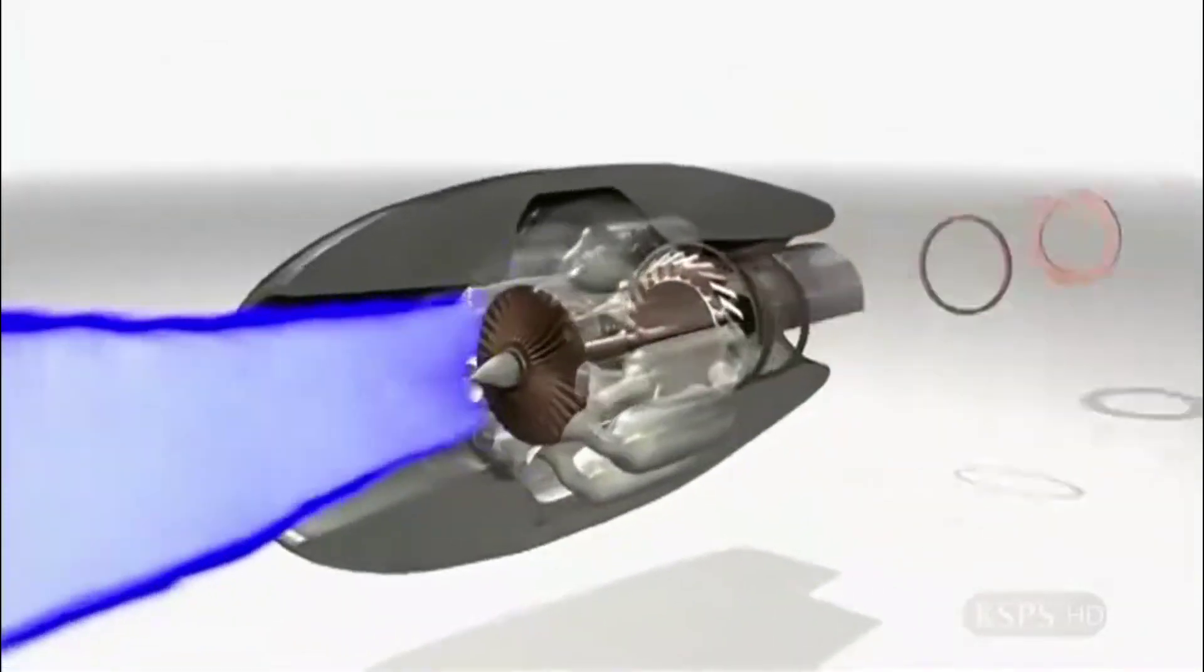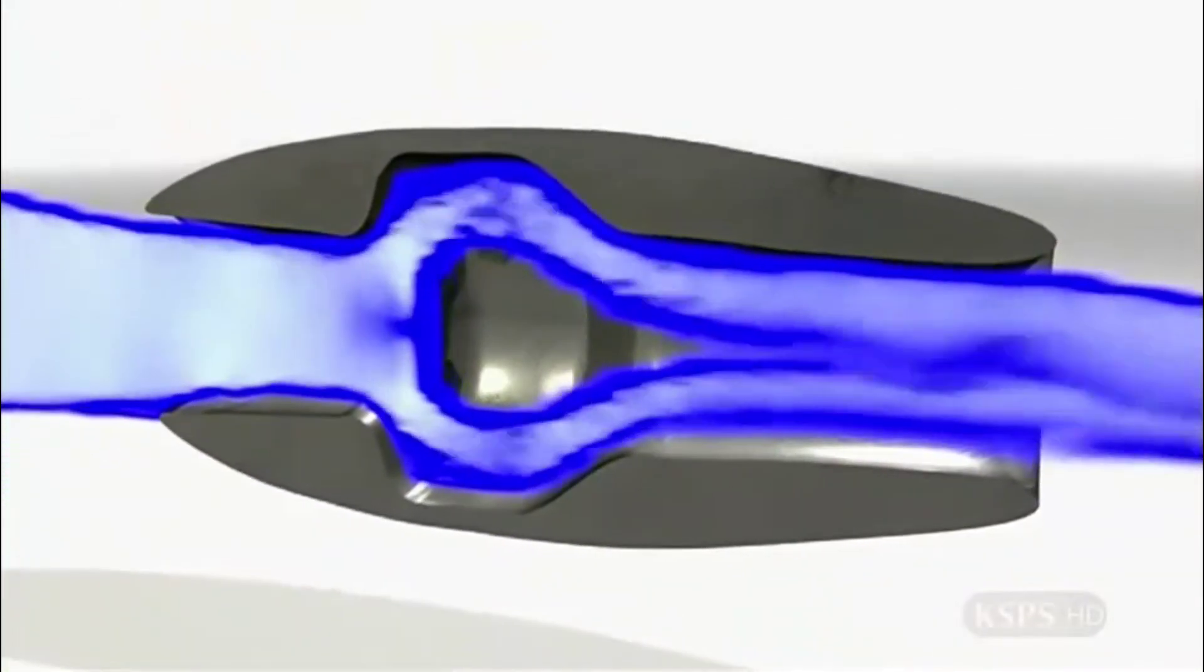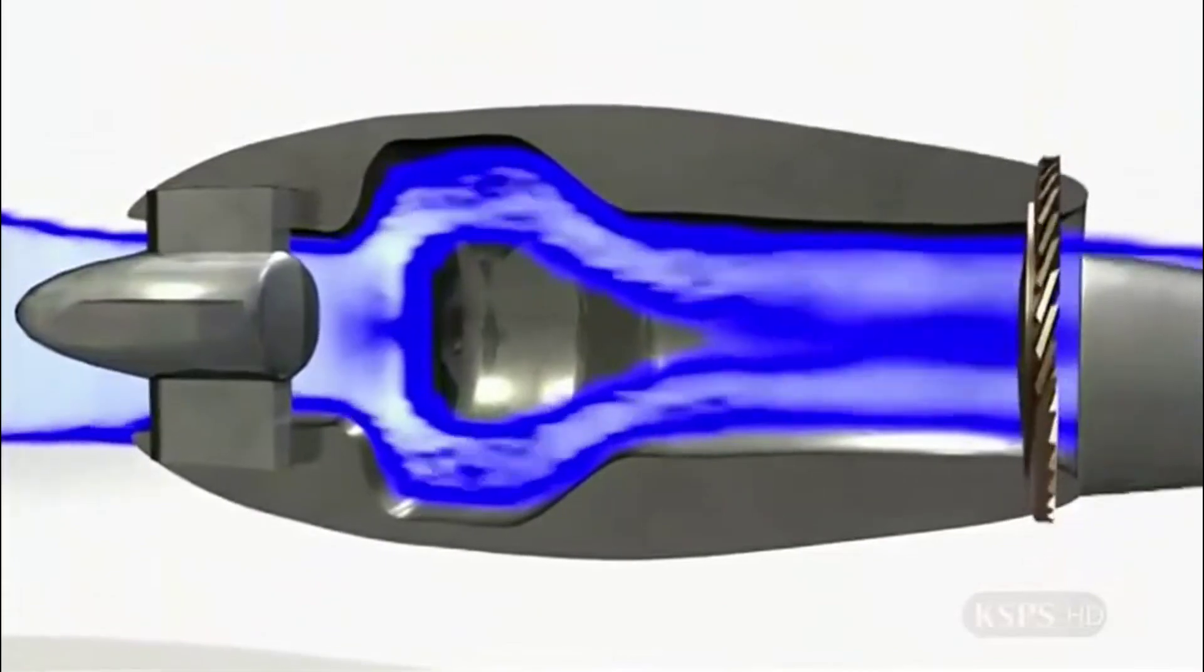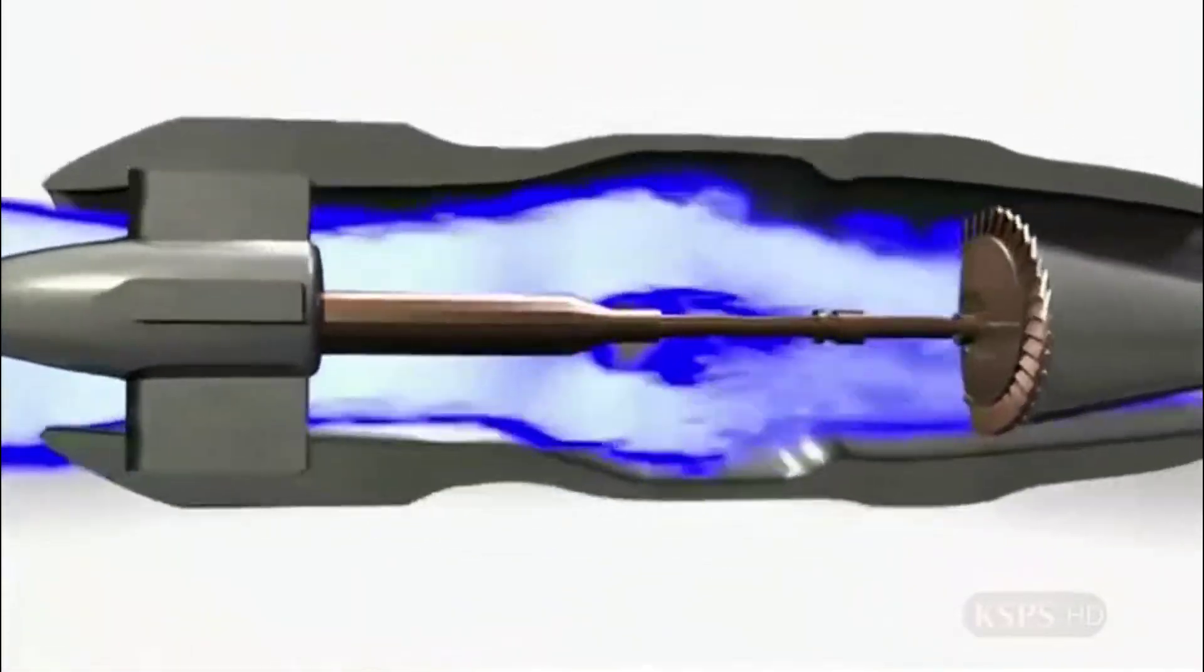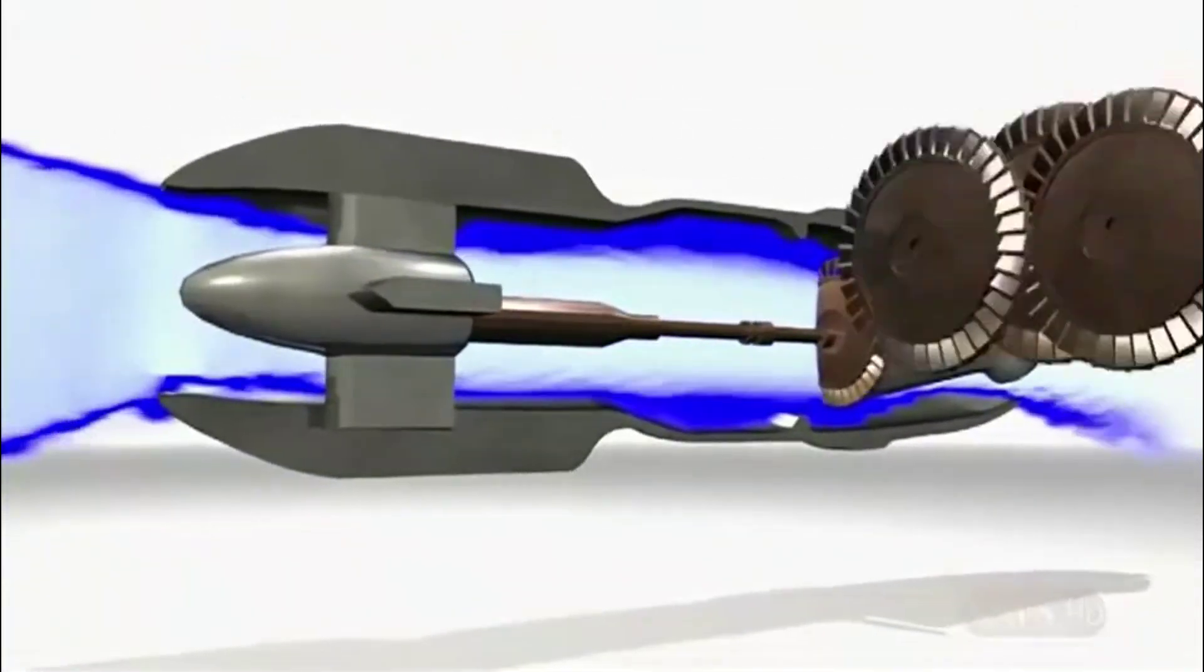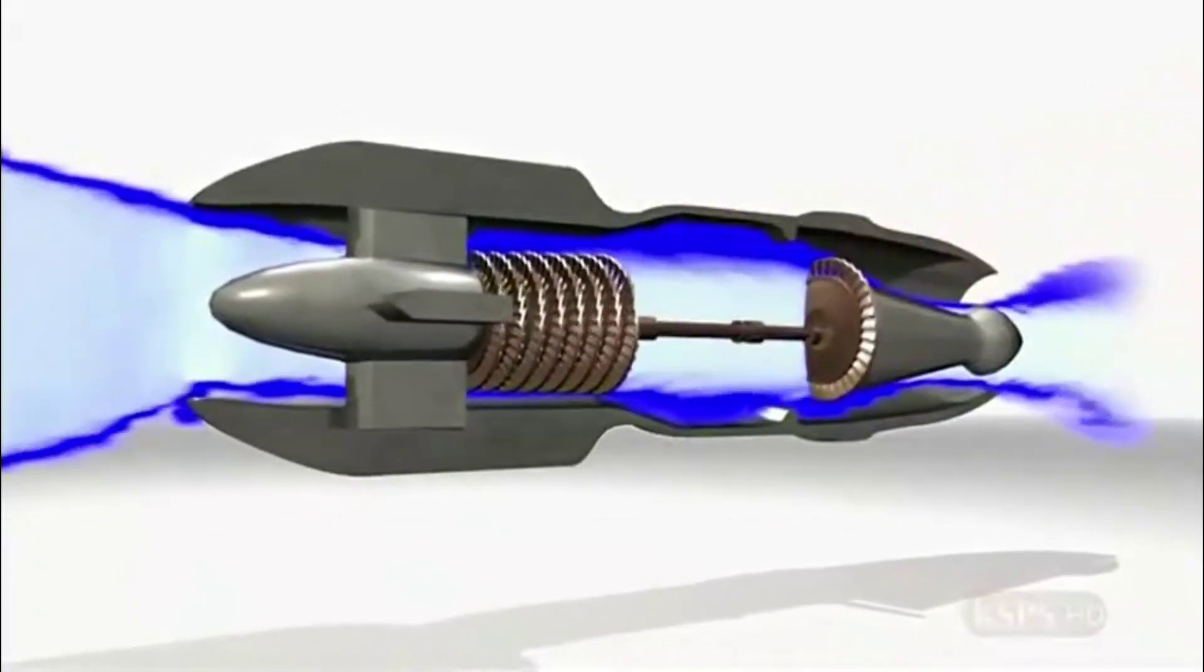The German axial flow engine was entirely different. Instead of one large disc and peripheral combustion chambers, it used a series of small discs that compressed the air tighter and tighter into one central combustion chamber.